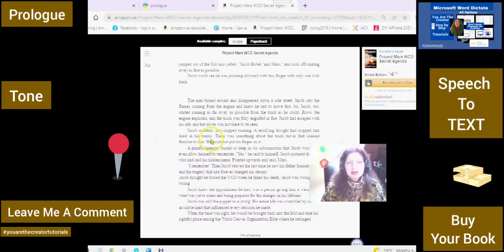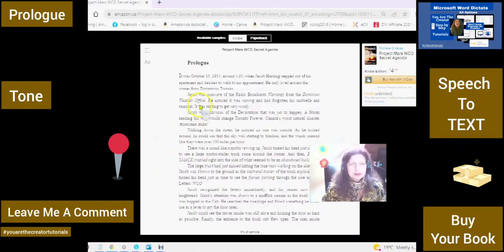Okay, I'll just read it. Okay. This is my prologue. Now, this is my first prologue. This is my first novel. So don't be too hard on me. It was October 15th, 1954, around 4:30, when Jacob Harding stepped out of his apartment and decided to walk to his appointment.